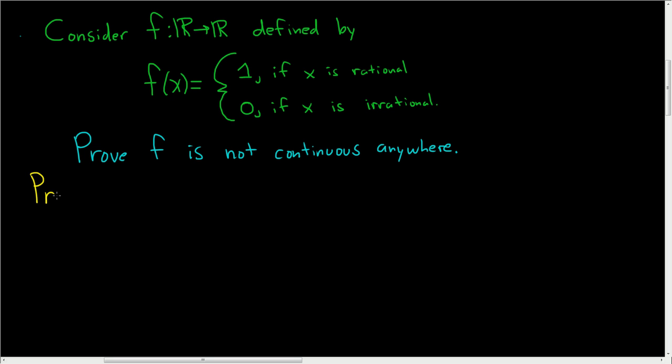Proof. And by the way, this is sometimes called Dirichlet's function. To prove it's not continuous anywhere, we're going to use a proof by contradiction.